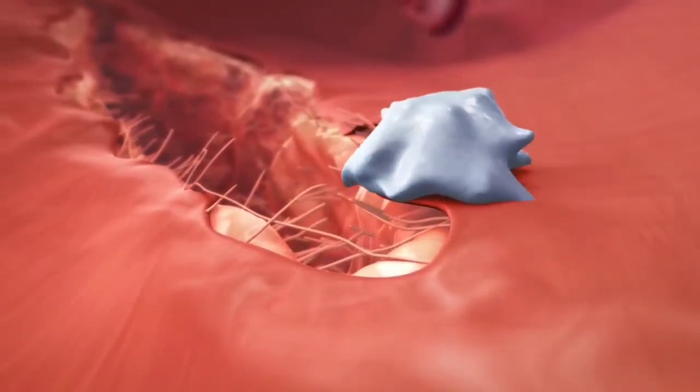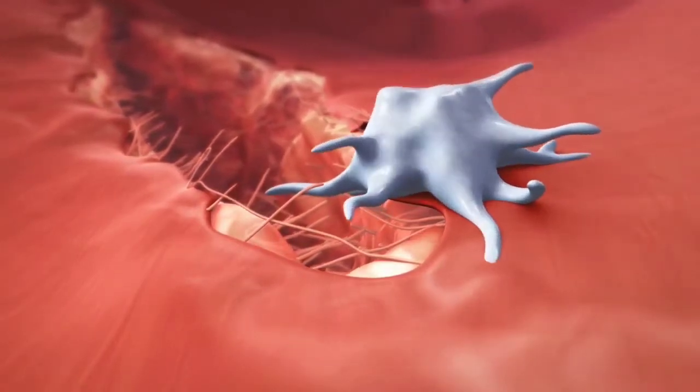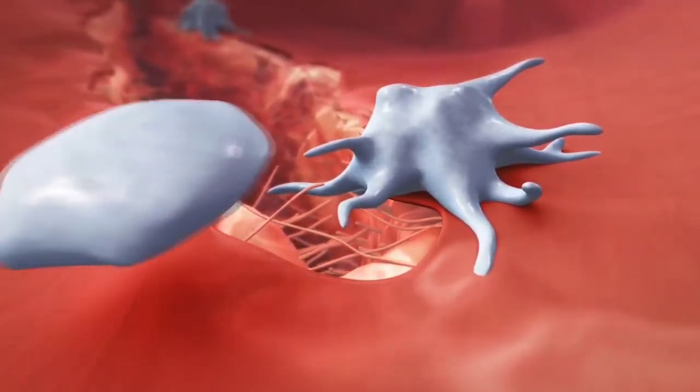The resulting change of shape of the platelet from its resting state into the dendritic form indicates activation.